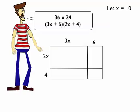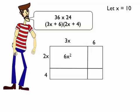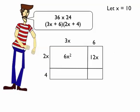Alright, so I'm going to fill out the multiplication table here. Yep, 3x times 2x is 6x squared. 2x times 6, 12x. 3x times 4, that's also 12x. Super.